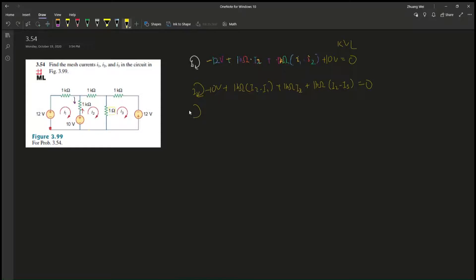And then the last one, i3, so we start from here, plus 1k ohm i3 minus i2, right, plus 1k ohm i3, and then minus 12V gives you zero.